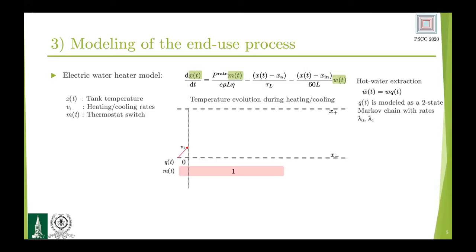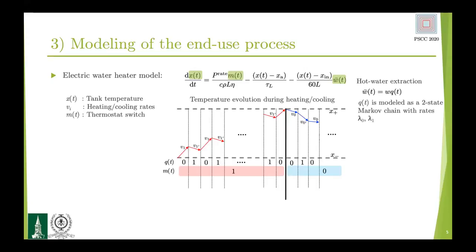We first look at how the temperature evolves inside the tank of an electric water heater. Electric water heaters are usually designed to operate within a narrow dead band, shown here as X minus and X plus. We can look at how the temperature evolves by looking at small time instances. For example, in the first interval starting from the on state — meaning the electric water heater is on but there is no water extraction, so Q is equal to zero — it's reasonable to assume that the temperature will increase with some rate V1. In the next time instance, because of water extraction, the temperature will momentarily decrease with some rate V1 prime. We can follow how the temperature evolves within the dead band until it reaches the boundary X plus, at which point it turns off, and then the temperature monotonically decreases, but depending upon whether extraction is present or not, the rates may be different.